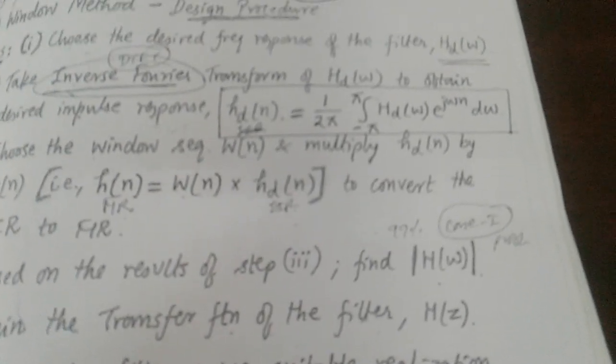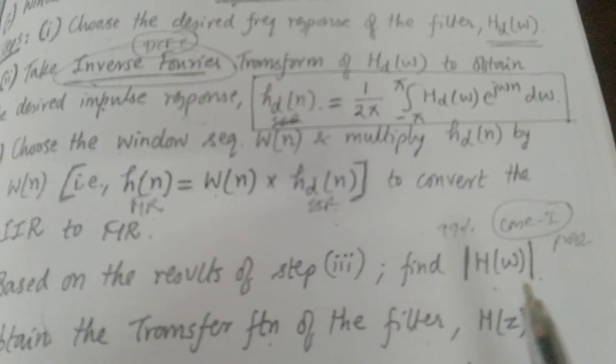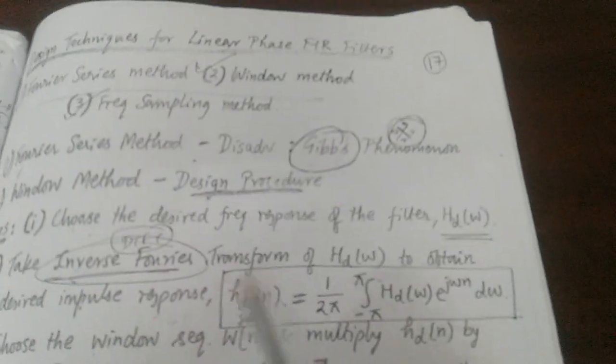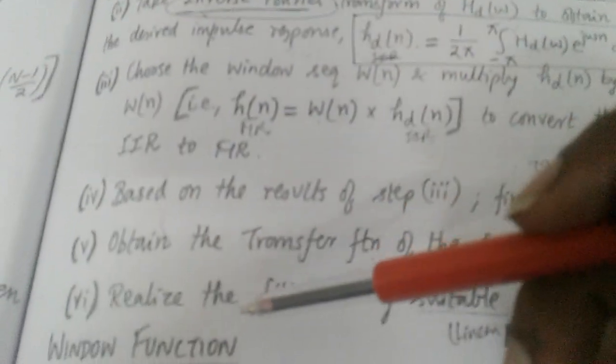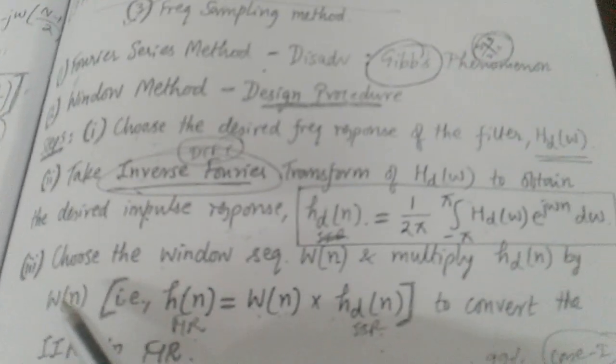Step 5 is to obtain the transfer function H(z) of the filter. The last step is to realize the filter using linear phase realization. Note: if the question asks to 'design a filter,' complete all six steps. If it asks only to 'determine the impulse response coefficients,' stop at step 3.